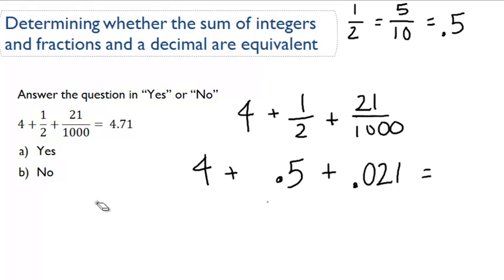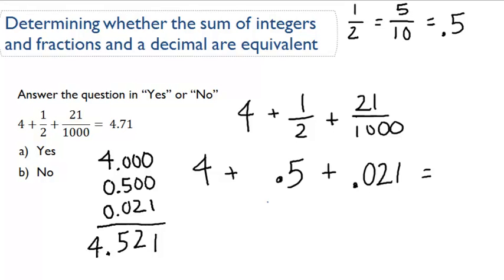4, I'll write them up over here, 4 plus 0.5, and I'm adding place-holding zeros, 0.021. If we add these up, 0 plus 0 plus 1 is 1, 0 plus 0 plus 2 is 2, 0 plus 5 plus 0 is 5, and finally, 4 plus 0 plus 0 is 4. 4.521.